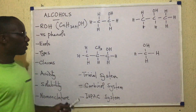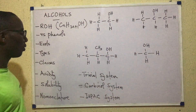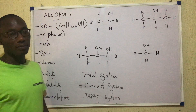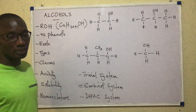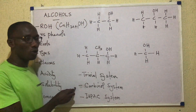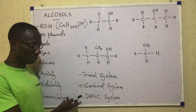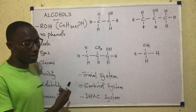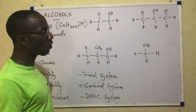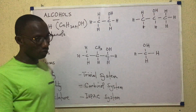Welcome back. For nomenclature of alcohols, we have different systems of naming them. There's the trivial system — trivial names are common names of organic compounds. Then specifically for alcohols, there's the carbinol system. And then we have the systematic names of alcohols, by the IUPAC system, where we have a set of rules that guide us. There are some alcohols on the board that we'll use to show how each of these systems work.